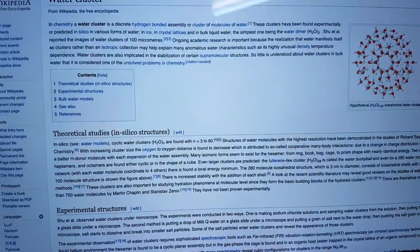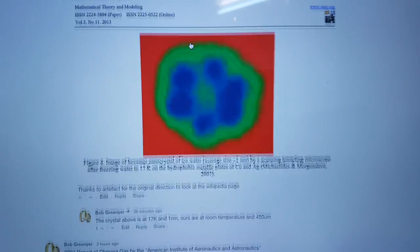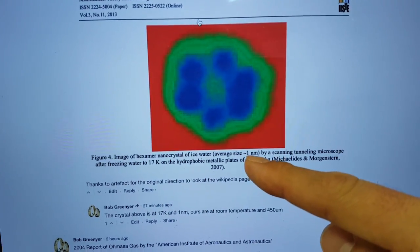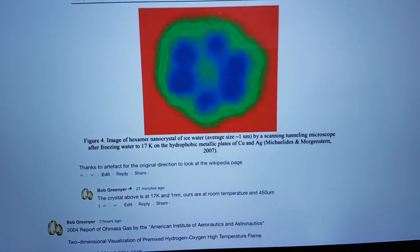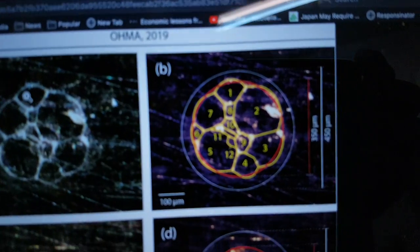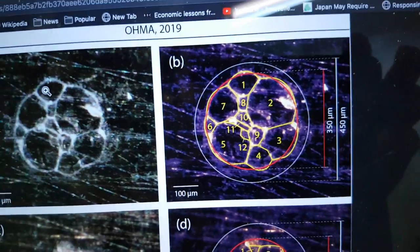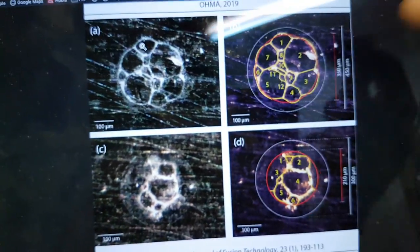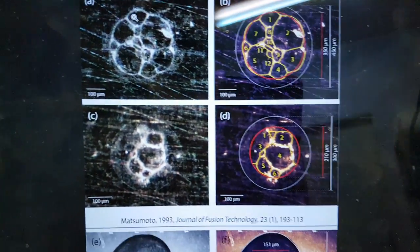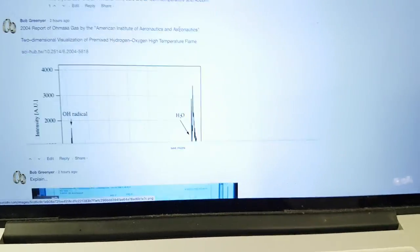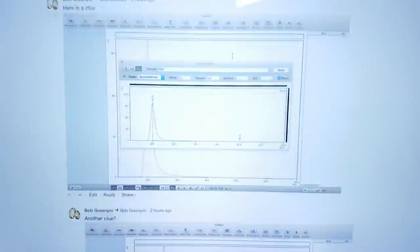Now there is another water cluster here, this one at 17 Kelvin and it's only one nanometer. Well we're seeing things that are 450 micrometers across. These things are big and they are at room temperature.